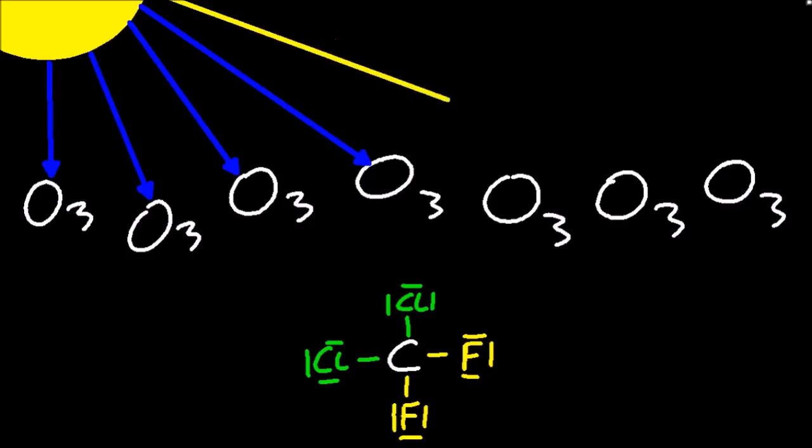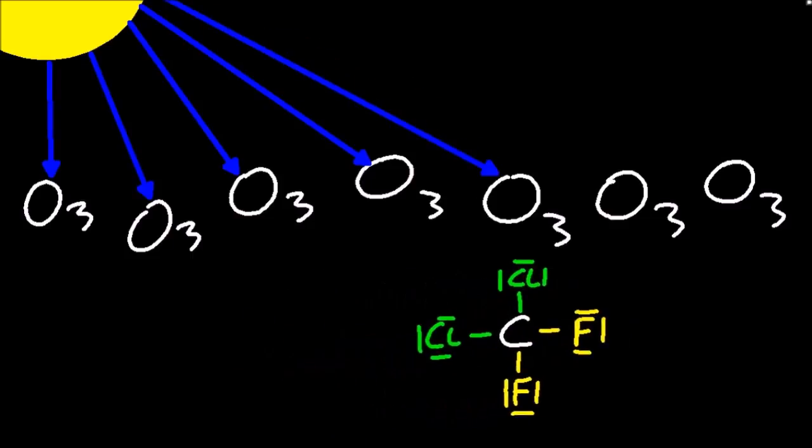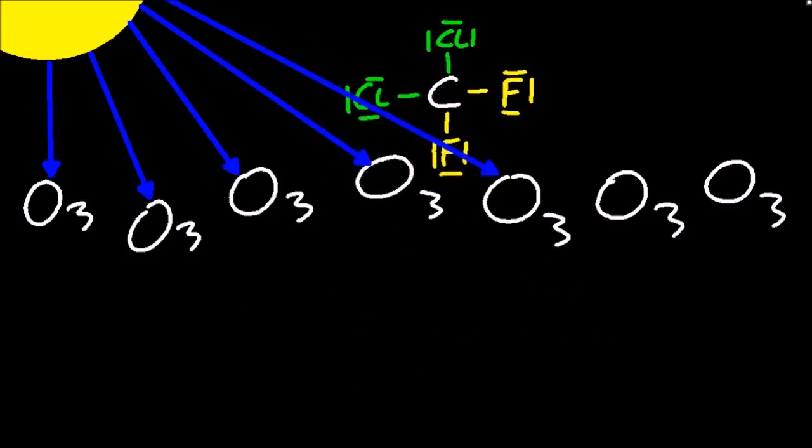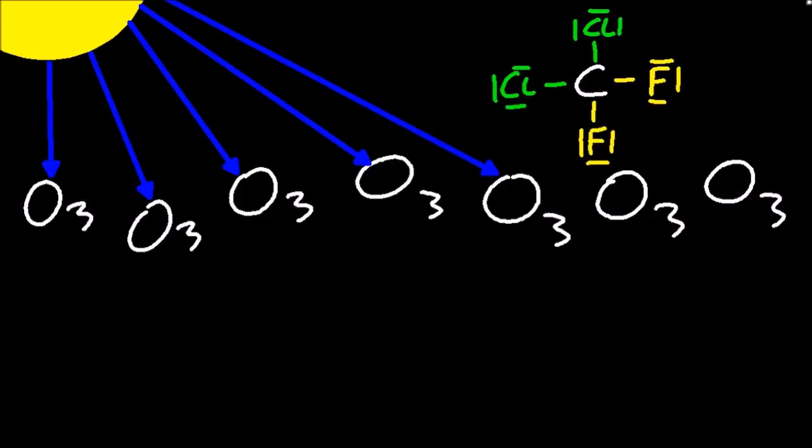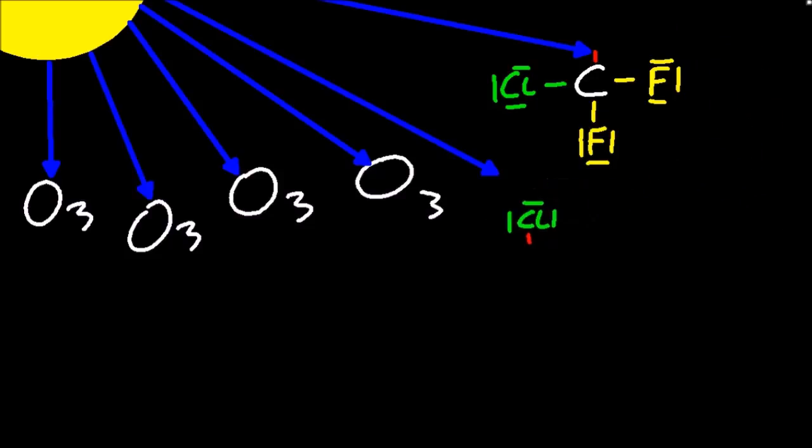So the ozone layer protects us against high energy radiation from the Sun, and the CFCs don't react until they get up to the ozone layer, where the Sun's rays have such high energy that they break the bond between the carbon and the chlorine, producing a chlorine radical. It's a high energy chlorine atom, which destroys the ozone in the ozone layer.